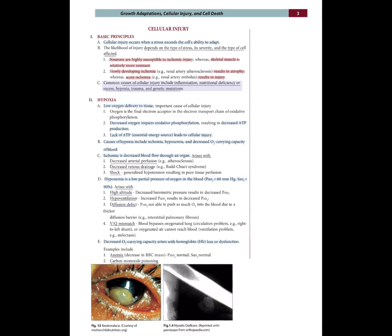Hypoxemia is a low partial pressure of oxygen in the blood (pO2 < 60 mmHg, SaO2 < 90%). It arises with high altitude (decreased barometric pressure results in decreased pO2), hypoventilation (increased pCO2 results in decreased pO2), diffusion defect (pO2 not able to push as much oxygen into blood due to a thicker diffusion barrier — e.g., interstitial pulmonary fibrosis), and VQ mismatch — blood bypasses oxygenated lung (e.g., right-to-left shunt) or oxygenated air cannot reach blood (e.g., atelectasis).